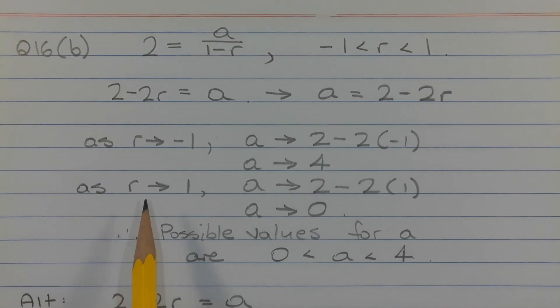Now as R approaches positive 1, A approaches 2 minus 2 times 1. Now 2 minus 2 times 1 is equal to 0, which means A approaches 0.